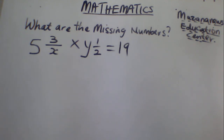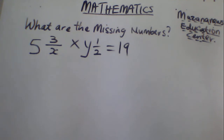When you see this type of problem, the first thing you have to do — because this is a multiplication of mixed fractions — is to convert the mixed fractions to improper fractions. Then it will be easy for you to find the value of x and y.